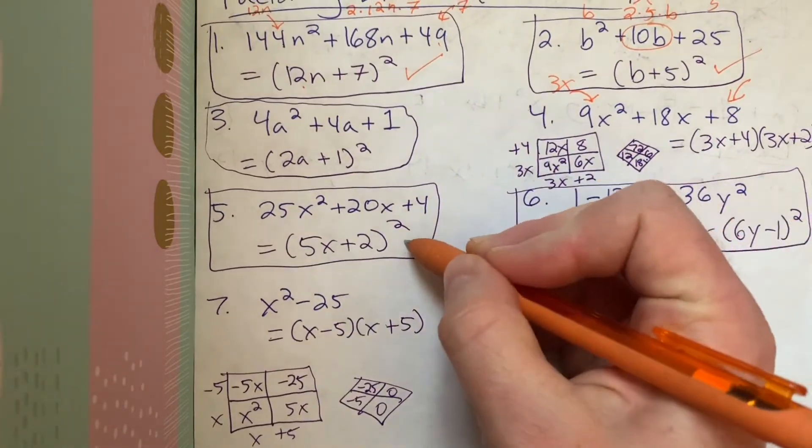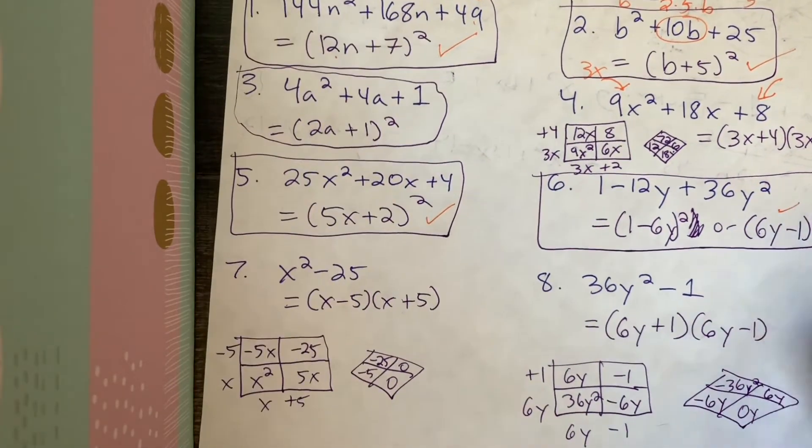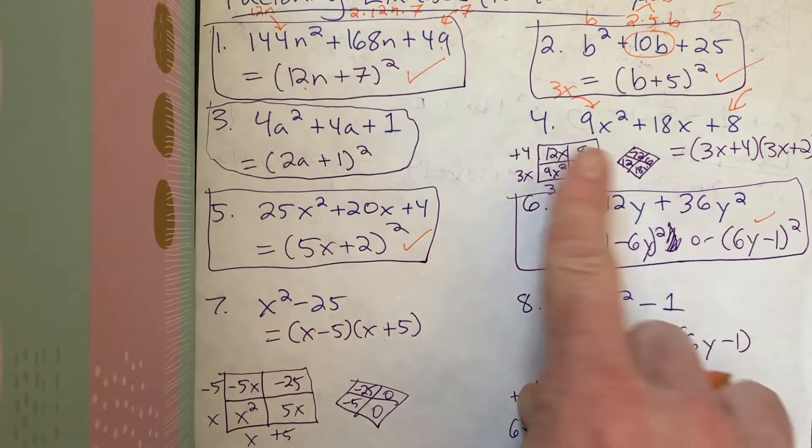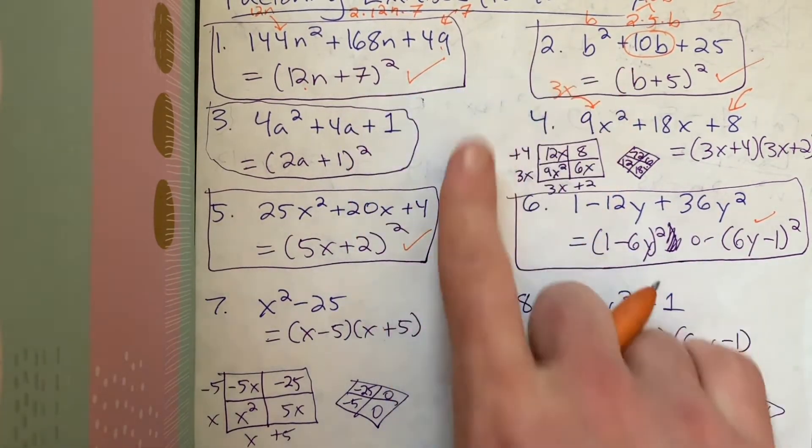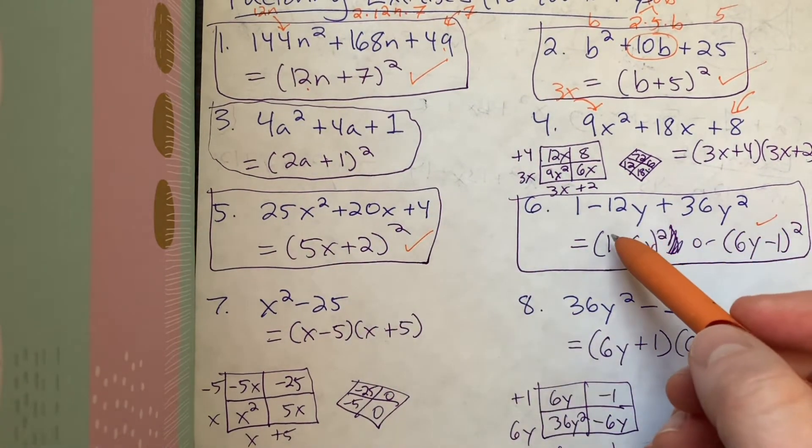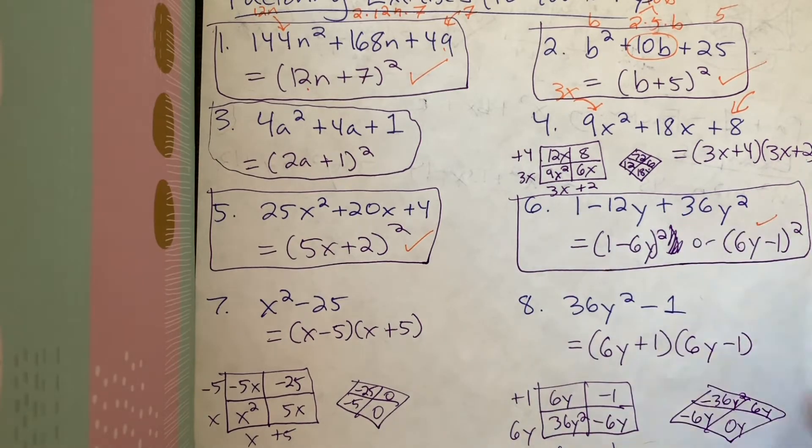All right, this one was a perfect square too. So was this one. This one was kind of interesting. Here, you could have factored it two different ways. All these things actually could be factored, or at least the negative ones could be factored in more than one way. This one here, I just want to spend much time on this one.